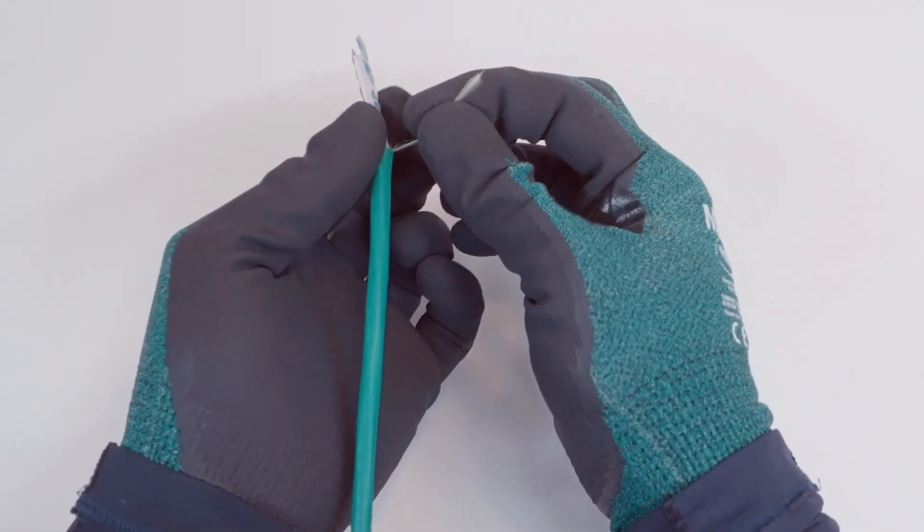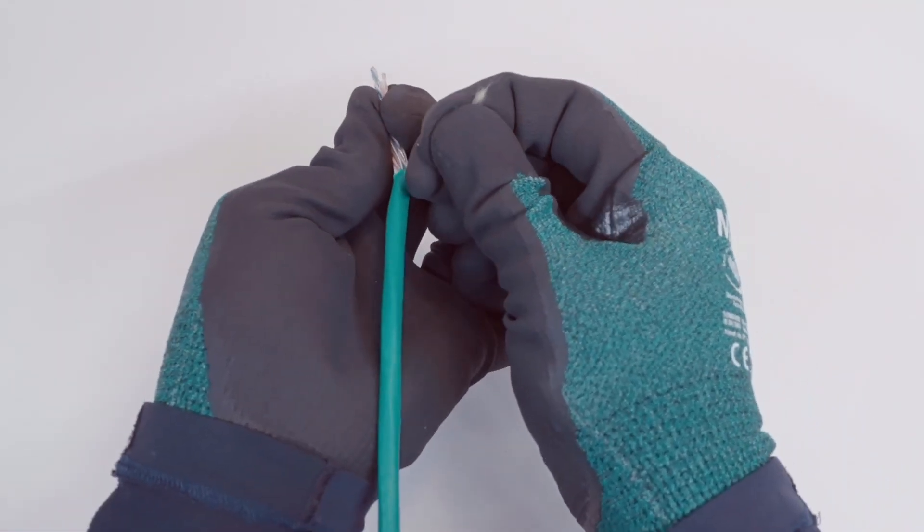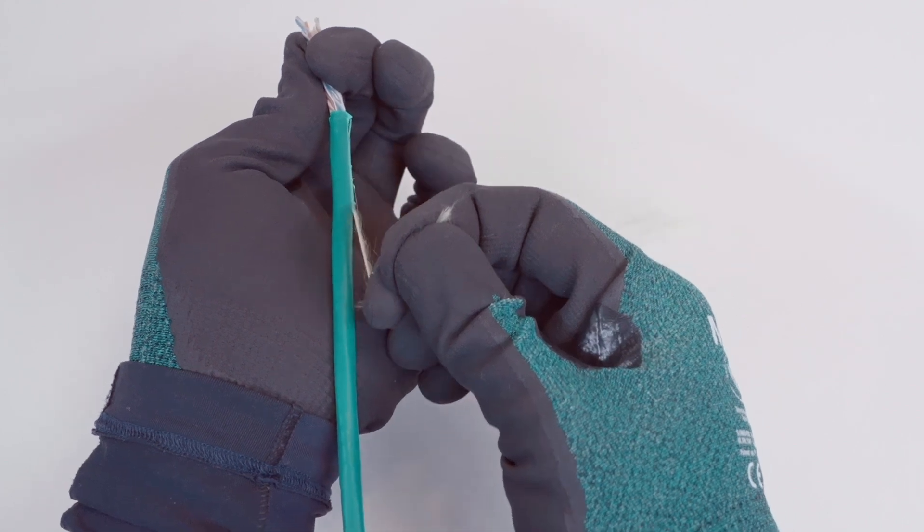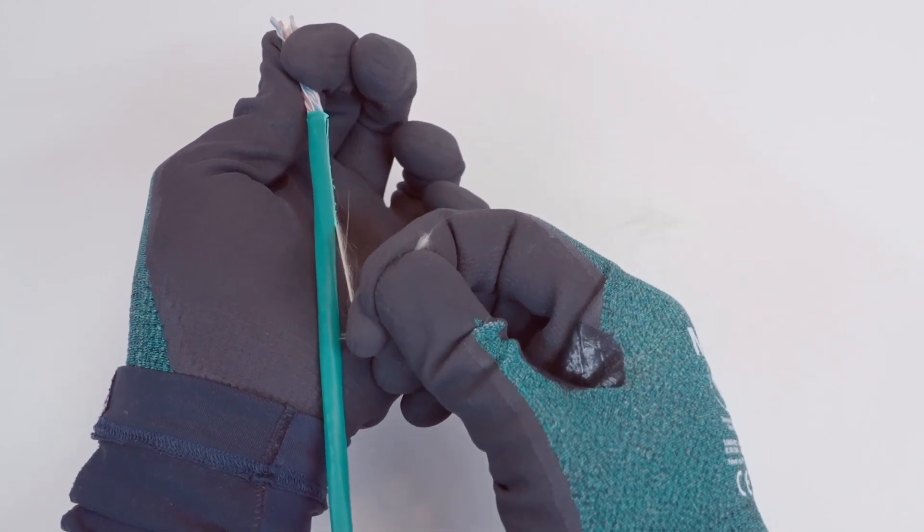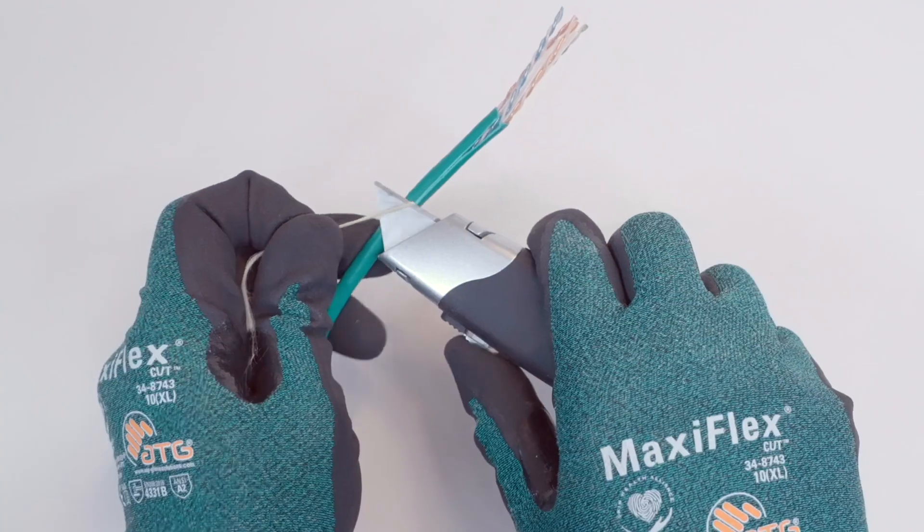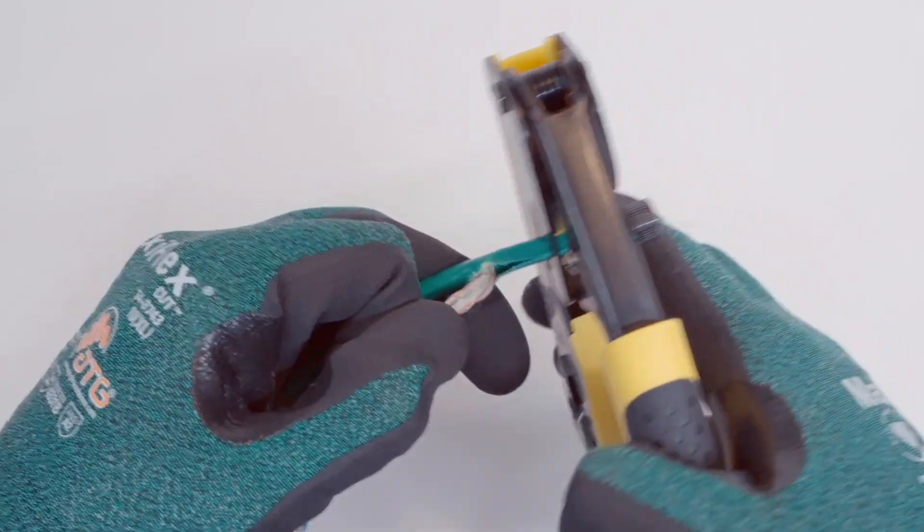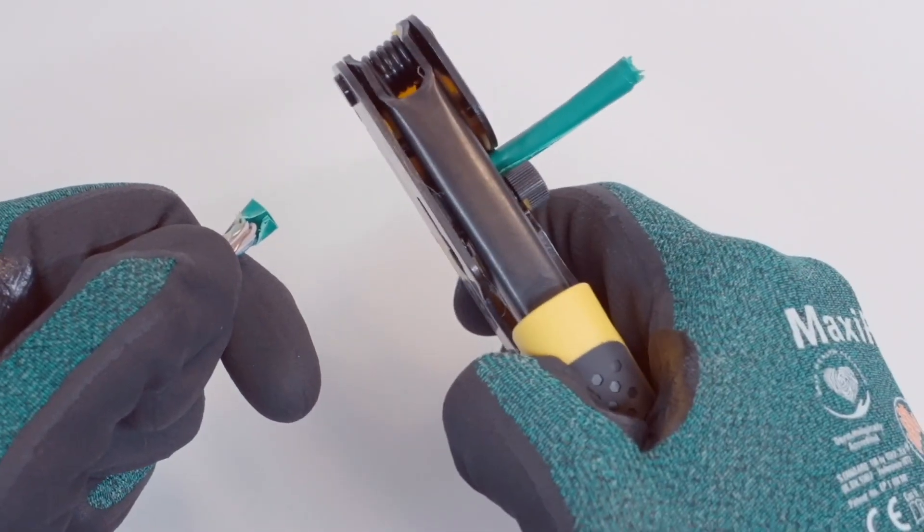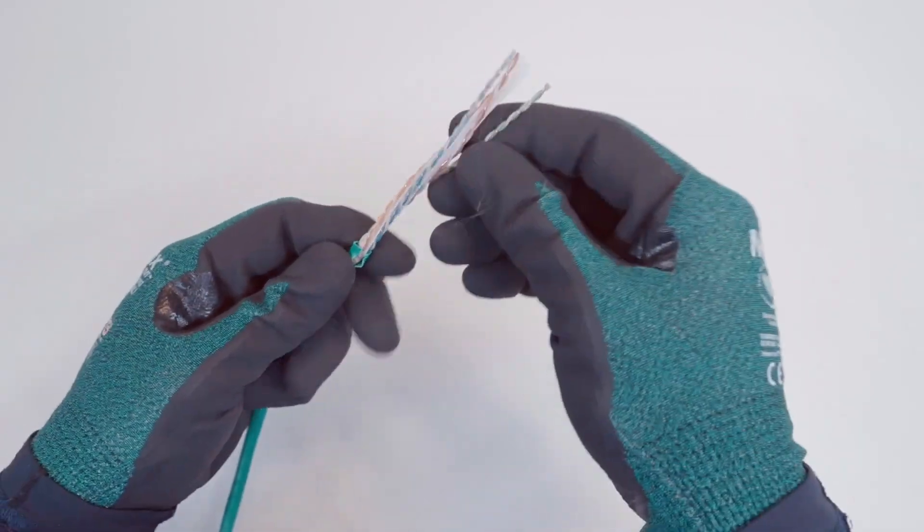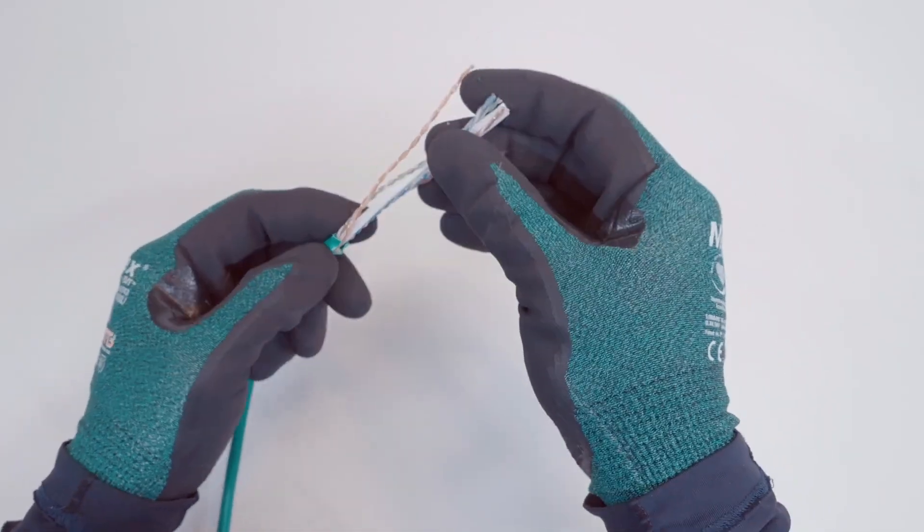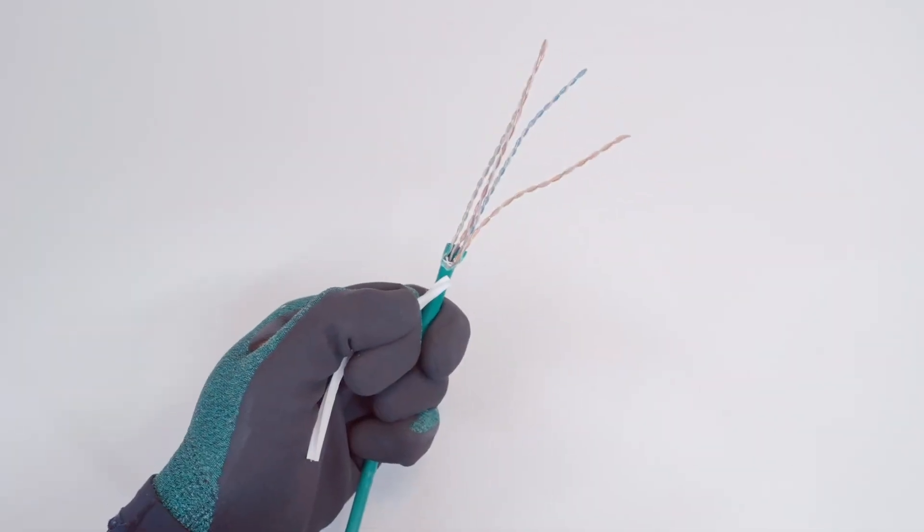Some cables include a ripcord. If present, use it as it will ensure access to a section free of damage. Pull the ripcord about a finger's worth in length. Cut off the ripcord. Bend the wires away from the jacket and carefully cut the jacket. If a separator called a spline is present, return the wires to their original position and carefully cut the spline.